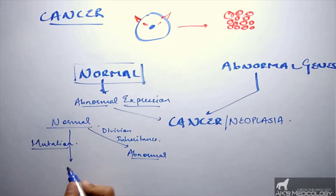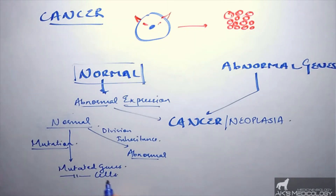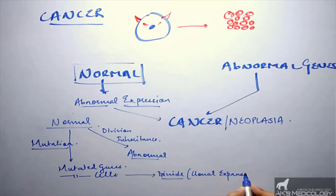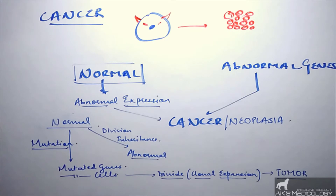Normal genes undergo mutation and are called mutated genes, and such cells are called mutated cells. These mutated cells may undergo changes that cause them to divide rapidly — a process called clonal expansion. Clones of similar cells are formed at an expanding rate, which ultimately leads to a tumor, known in lay terms as cancer and biologically as neoplasia.